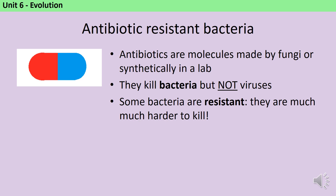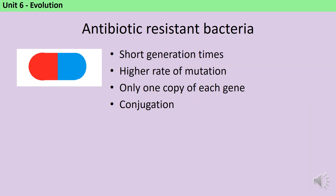We'll look at one more example — antibiotic resistance. Antibiotics are molecules made by fungi or synthetically in a lab used to treat bacterial diseases. They kill bacteria but not viruses, since viruses hide inside your cells. Some bacteria can be resistant to antibiotics, meaning they're much harder — but not impossible — to kill. Evolution by natural selection happens much faster in bacteria than in animals and plants. The first reason is their short generation time: an animal generation might be 20 years, whereas a bacteria generation might be only 20 minutes, so the whole process takes much less time.